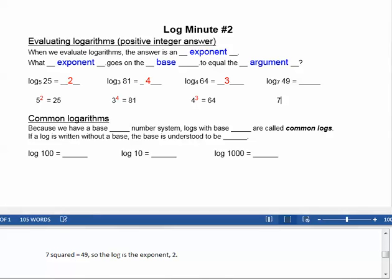7 squared equals 49, so the log is the exponent, 2.